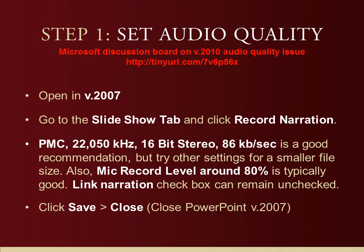You'll want to set the record levels at around 80%. Also in that Record Narration dialog box, you're going to see a little check box in the bottom left — that's Link Narration, referring to saving your audio as external audio files in addition to having them embedded in your PowerPoint. We don't need to do that with this tutorial, so you can leave that unchecked. Once you set your audio levels in PowerPoint 2007, save that PowerPoint, close it, and get out of PowerPoint 2007 completely.